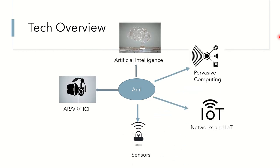As for the technologies connected to ambient intelligence systems, we have artificial intelligence, machine learning, deep learning, and NLP. Pervasive computing, networking, and IoT are essential, and sensors are like the kidney, heart, and liver of the entire system — without sensors nothing works. Augmented reality, virtual reality, and human-computer interaction all come together to create a complete ambient intelligence setup.